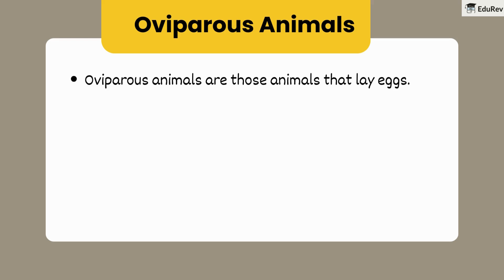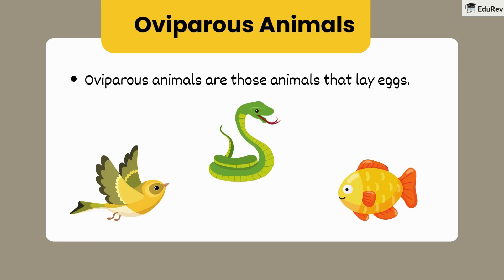Let's start by looking at oviparous animals. Oviparous animals are those that lay eggs. Can you think of some examples? That's right — birds, snakes, and fish all lay eggs. When these eggs hatch, baby animals come out.